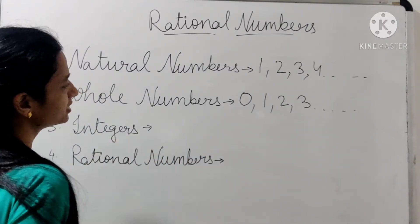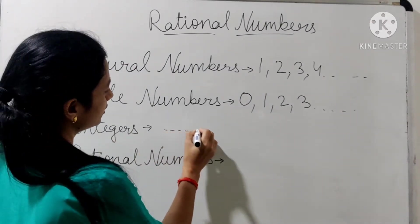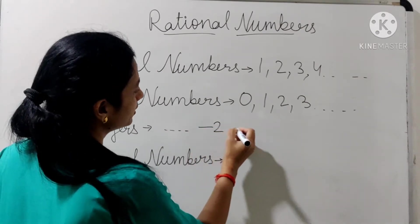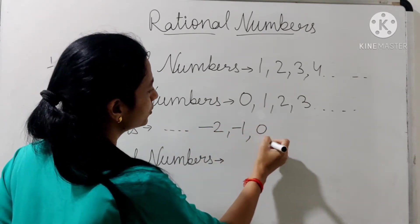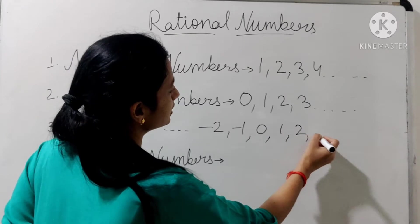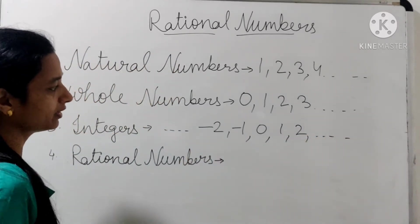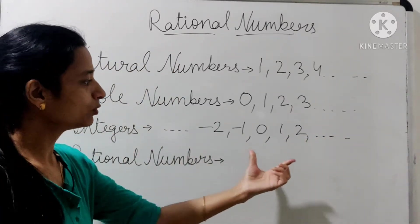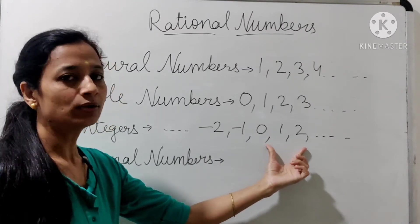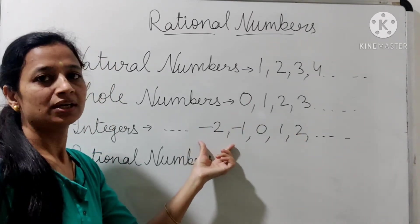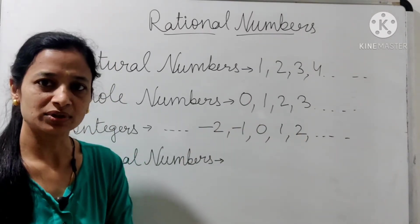इसके बाद आते हैं हमारे integers. Integers क्या होते हैं? जहाँपर negative numbers, 0 और positive numbers, सभी numbers एक साथ होते हैं, वो हमारे integers होते हैं. Whole numbers हमारे हैं, लेकिन whole numbers के negative numbers भी होते हैं — यह हमारे integers होते हैं.